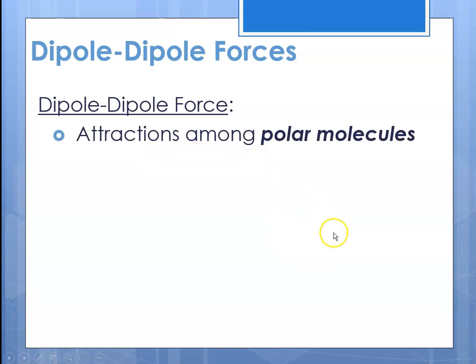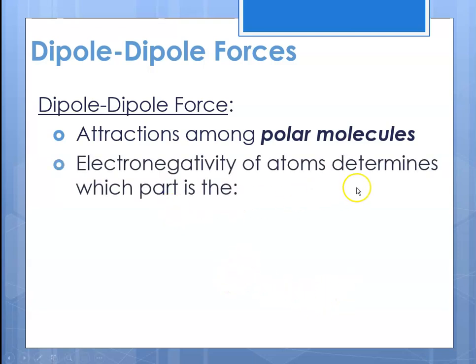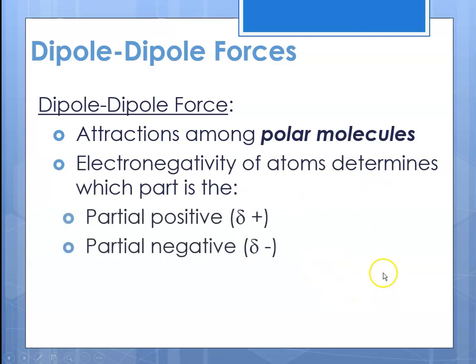Dipole-dipole forces are attractions among polar molecules. With polar molecules, there's a plus end and a minus end of the molecule because the electrons are not equally shared. One atom like oxygen might have the electrons closer to it, and the hydrogen might not have the electrons near it, so you have this plus-minus region. The electronegativity of atoms determines which part is the positive and which part is the negative side of a molecule. In things like water, hydrogen has a partial positive charge and oxygen has a partial negative charge, so the water molecules are attracted to themselves where there are these positive and negative regions.